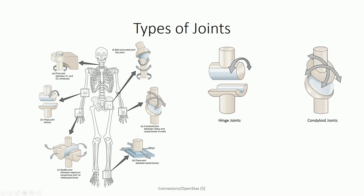Condyloid joints are similar to hinge joints in that a convex surface rests in a complementary elongated concave trough. The difference is that condyloid joints are curved along the elongated axis as well — think of an egg resting within a complementary cup. This permits wobble from side to side as well as rolling from front to back, making condyloid joints biaxial. Note that because there is an elongated axis, we do not see rotation between the two surfaces.